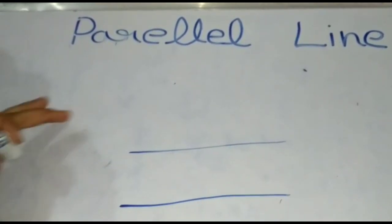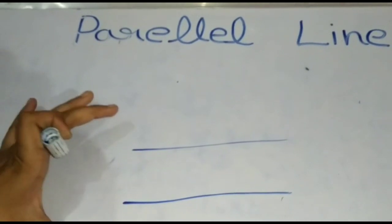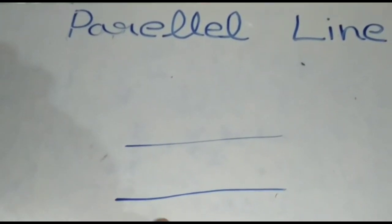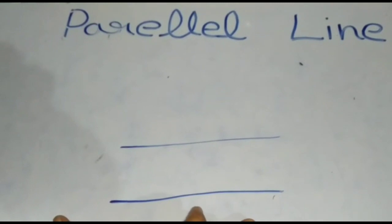I draw two lines. These two lines are parallel lines. Parallel lines are lines that do not intersect at any point, or we can say two lines that do not meet each other.